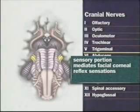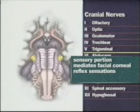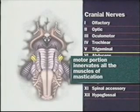The sensory portion of cranial nerve five, the trigeminal nerve, mediates facial sensation and the sensory part of the corneal reflex. The motor portion of the nerve innervates all the muscles of mastication. To test the nerve's motor function, ask the patient to clench and then relax his jaw while you palpate the temporal muscles and then the masseter muscles. Note the strength of muscle contraction.